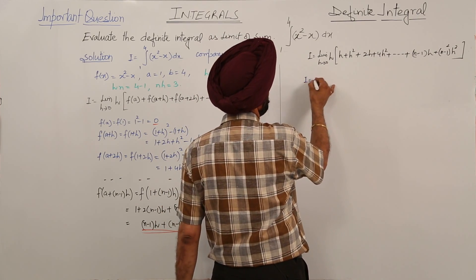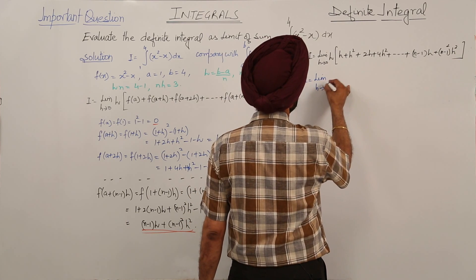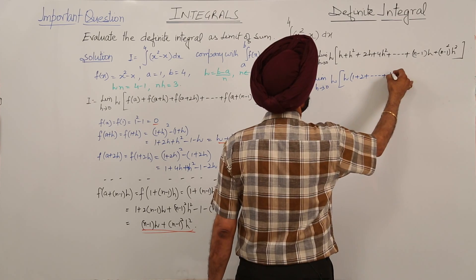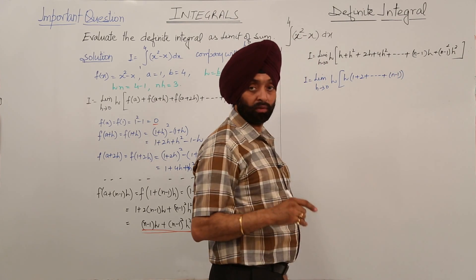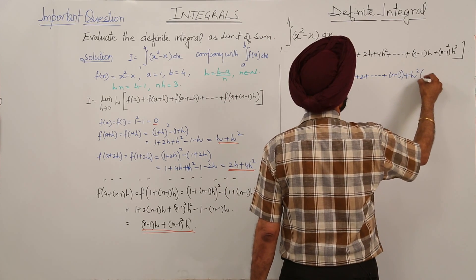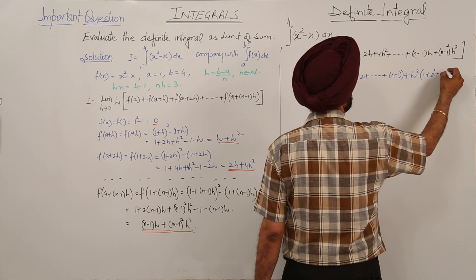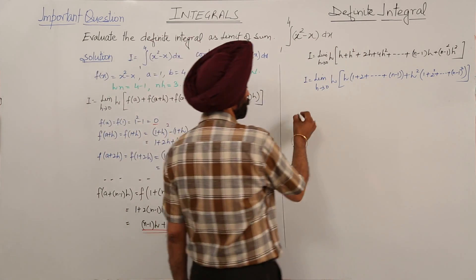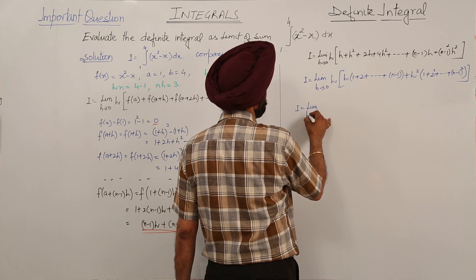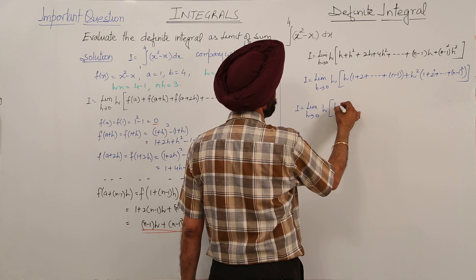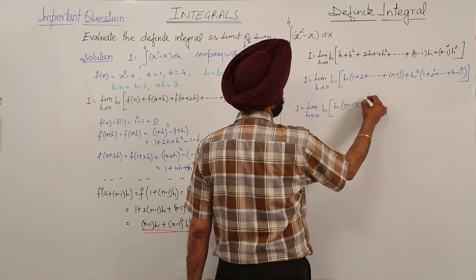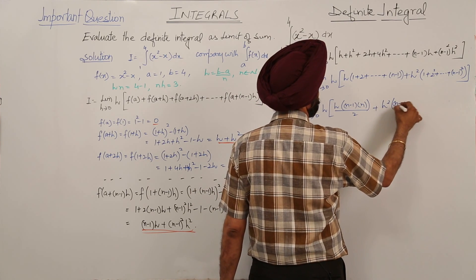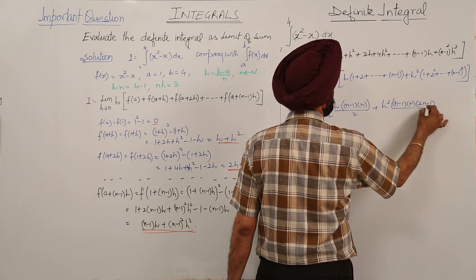Solving further: limit as h→0 of h times [h·(1 + 2 + ... + (n-1)) + h²·(1² + 2² + ... + (n-1)²)]. This becomes limit as h→0 of [h² · n(n-1)/2 + h³ · (n-1)·n·(2n-1)/6].